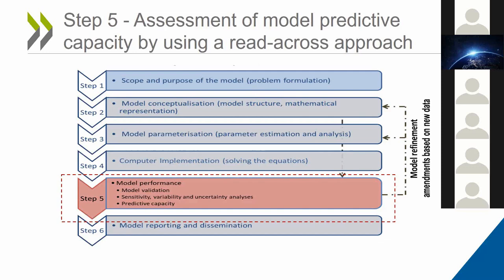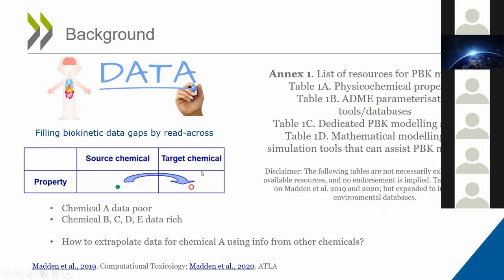The read-across technique is usually used to predict endpoint information for one substance — the target substance — by using data for the same endpoint from another substance referred to as the source substance. The source substance is our data-rich chemical that informs for the data-poor target chemical. For PBK modeling, if a valid PBK model already exists for a class of chemicals — say B, C, D, and E — we could use this information to make model predictions for chemical A, which lacks in vivo data.